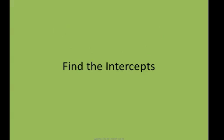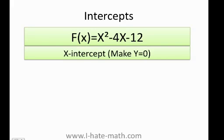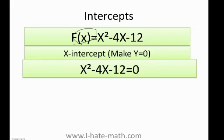Let's find the intercepts. The intercepts are going to be the key points where the line is going to cut the axis. In order to find the x intercepts we're gonna make y equals 0. Don't forget f of x is the same thing as y, so this is the same as x squared minus 4x minus 12 equals 0.